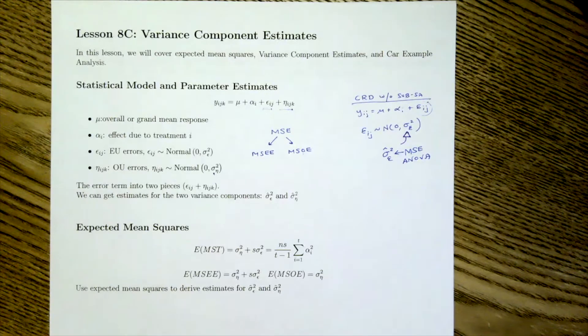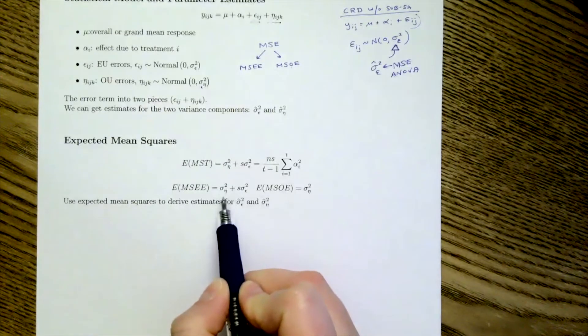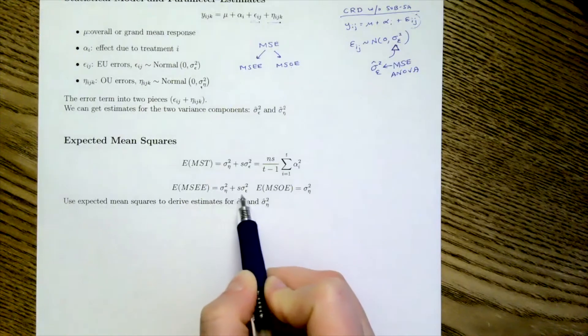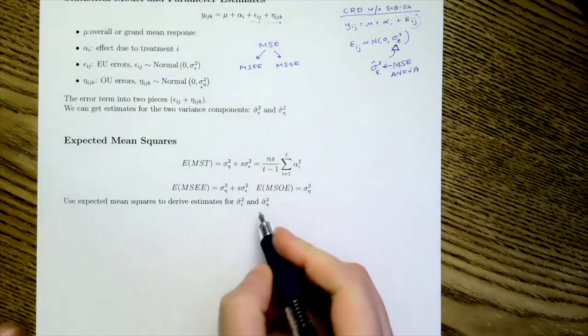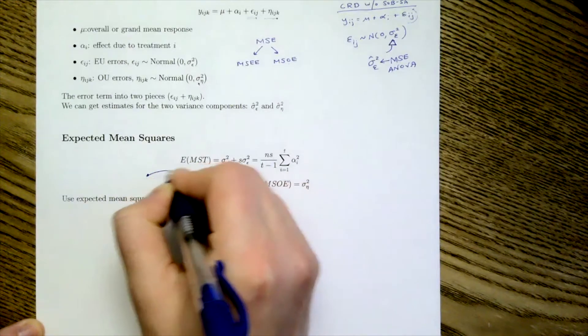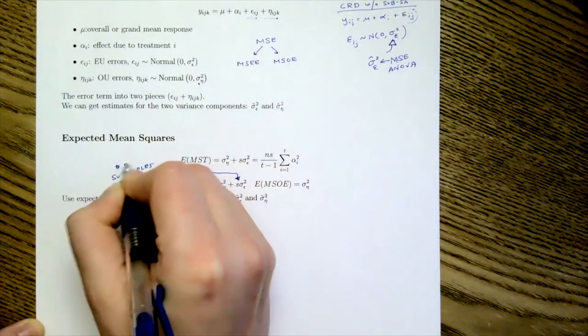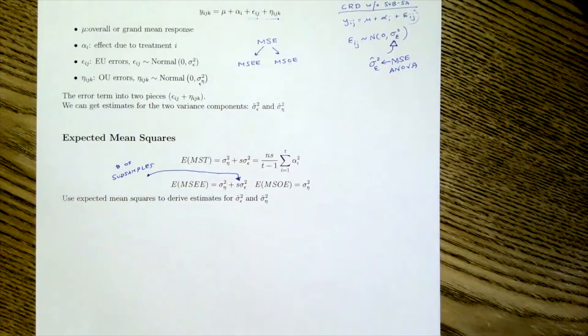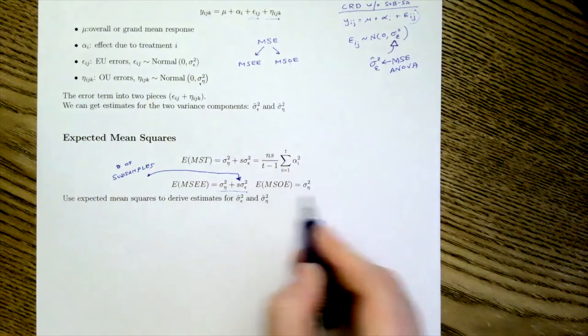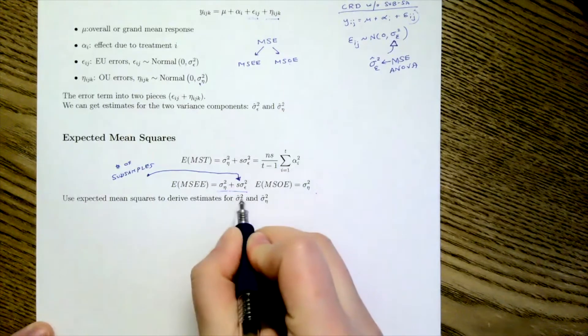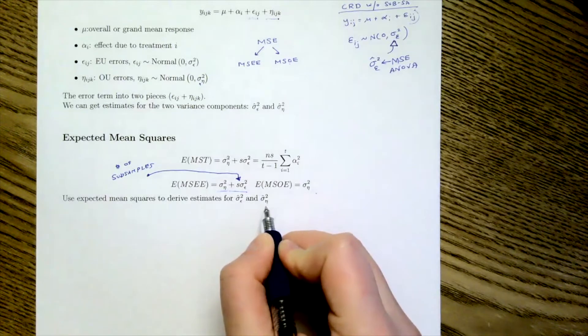So we're going back out and we're repeating the experiment and we're doing the analysis. And so the MSE is a random variable that we would expect if we were to repeat over and over and over to be a piece of the observational error and a piece of the experimental error, where S represents our sub-samples. So we're going to use these two formulas here to help us derive estimates for sigma hat squared epsilon and sigma hat squared eta.